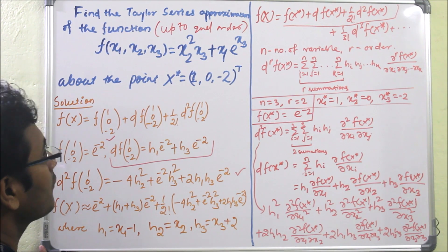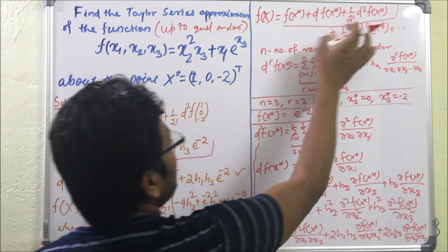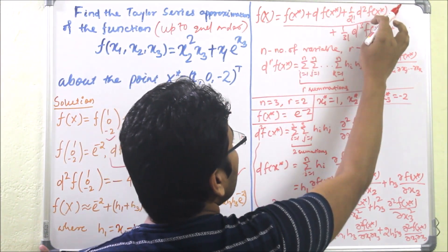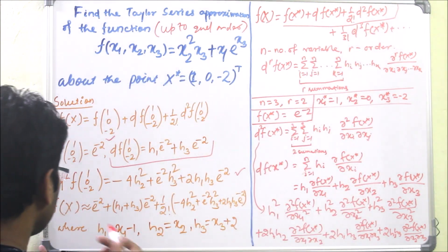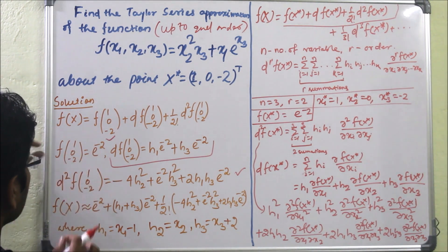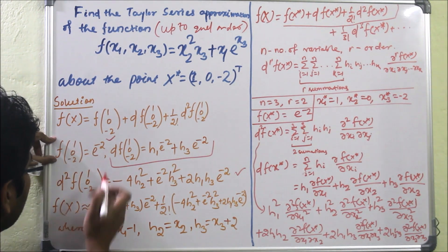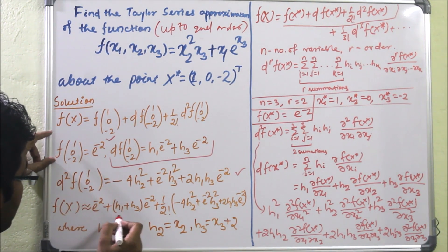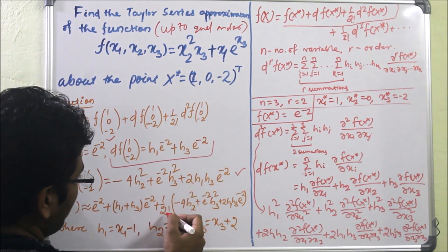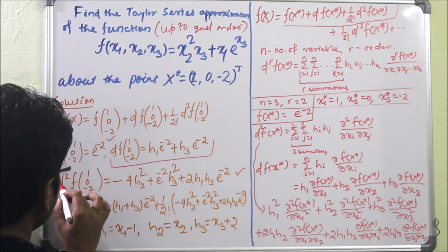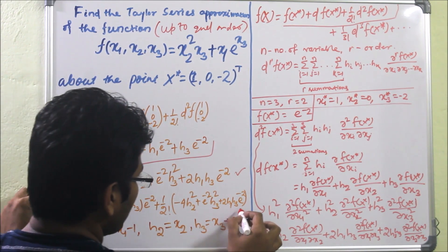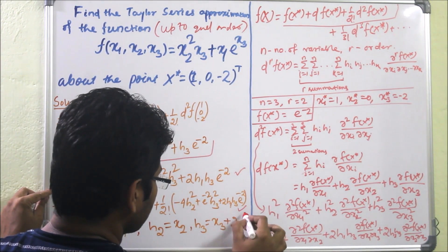Finally, we have to approximate up to second order. We got the three values, and now we add them. So f(x) is approximately equal to e^(−2), plus h1·e^(−2) + h3·e^(−2), plus one-half times d²f(1, 0, −2), giving us the final assembled expression.